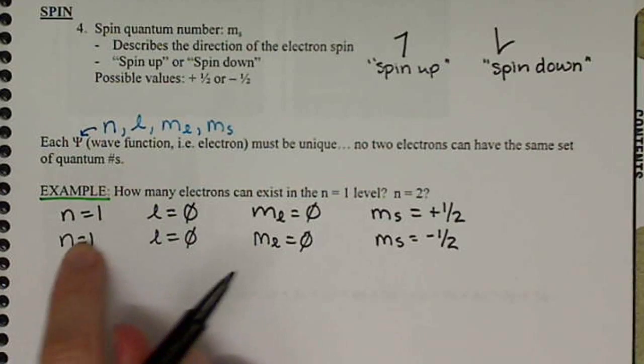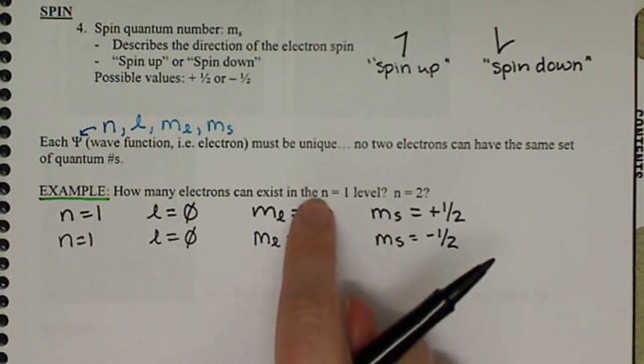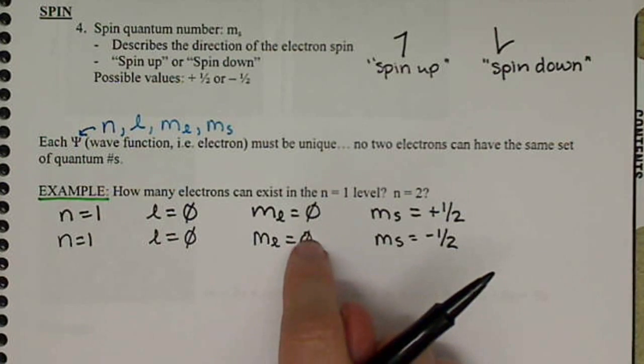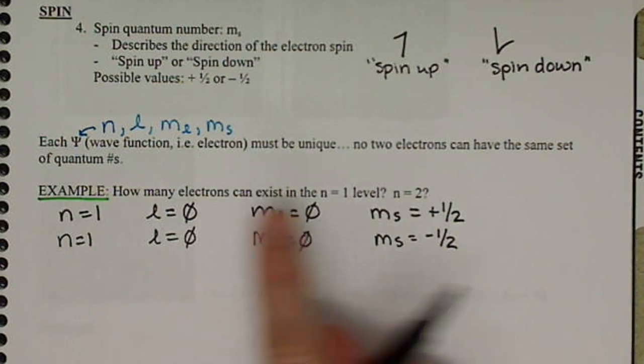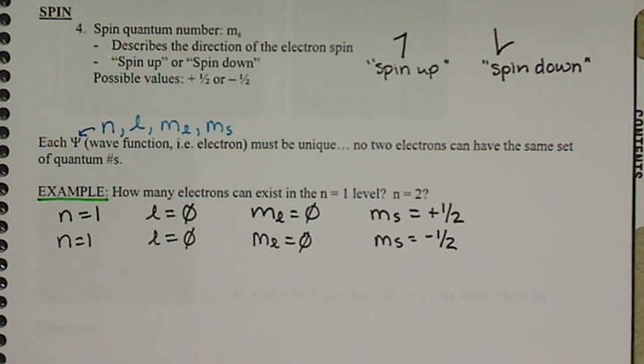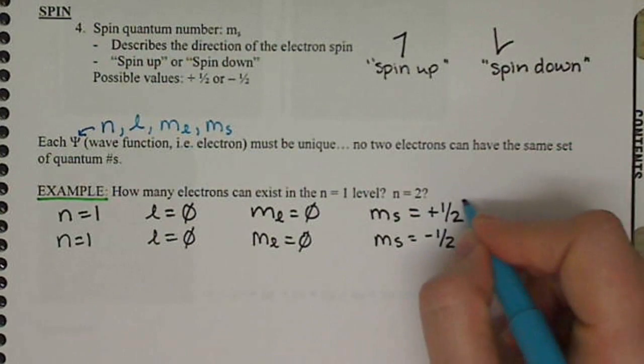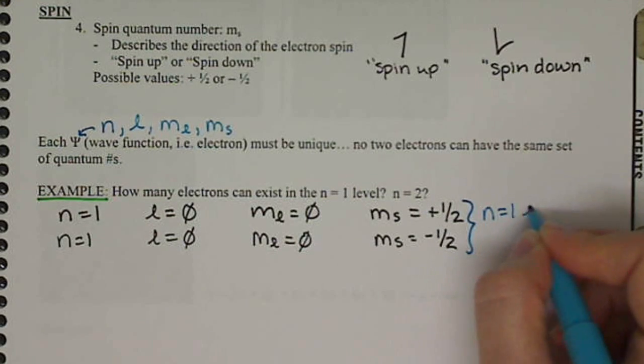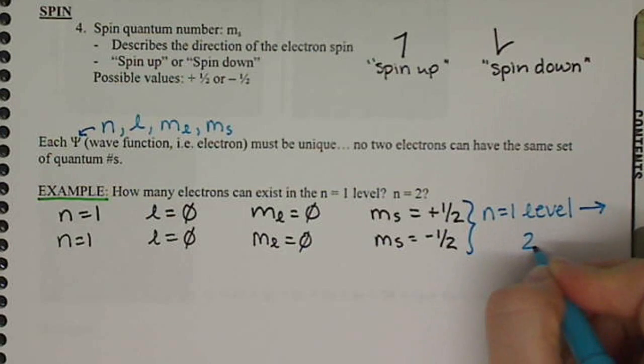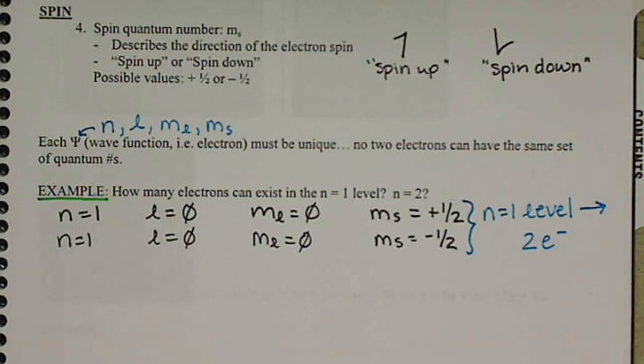Our second electron has the same quantum numbers except for the M sub S one. When N equals 1, L can only equal 0, so we've exhausted our Ls, we've exhausted our M sub Ls because that depends on L, and we've exhausted our two options for M sub S. So what this corresponds to is that in the N equals 1 level, we can only have two electrons.